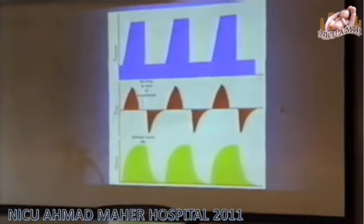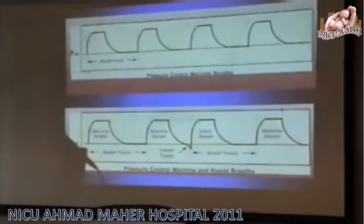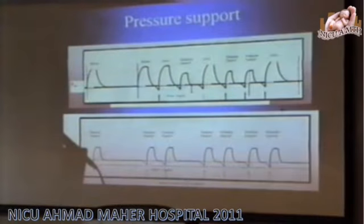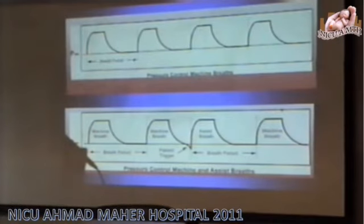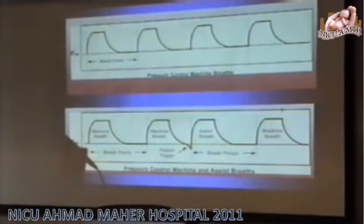The ventilator cannot truly know when the baby wants to stop, but it uses flow termination at 20% of peak flow to end the breath. To start a breath, the ventilator detects the baby pulling air in — using either pressure or flow triggering — and once it senses this, delivers a supported breath. The sensor tells the machine the baby is pulling in air, so it gives a breath; or the lung is nearly full, so it terminates. This is how the ventilator synchronizes with the baby — hence synchronized ventilation.